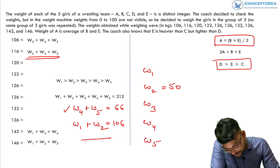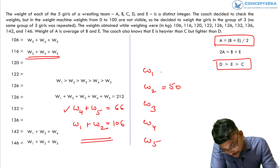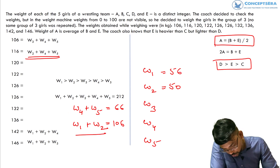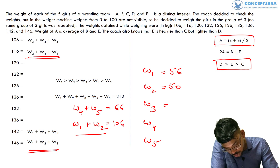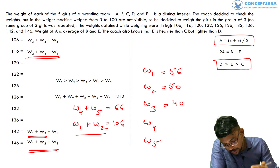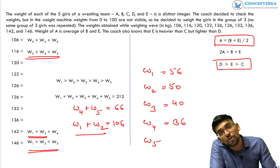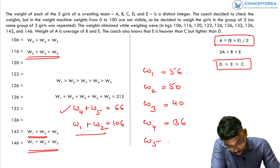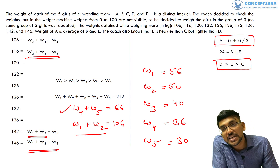Once we have W2 = 50, we find W1 = 106 − 50 = 56. Then W3 = 146 − 106 = 40. For W4: from W1 + W2 + W4 = 142, W4 = 142 − 106 = 36. And W5 = 66 − 36 = 30. So the individual weights are 56, 50, 40, 36, and 30.